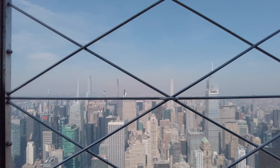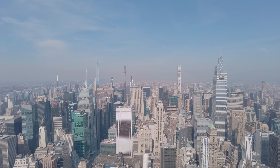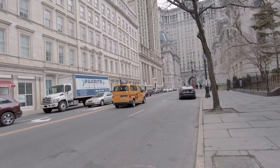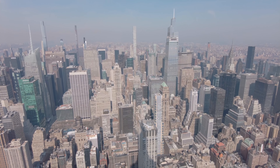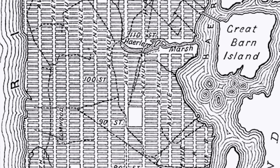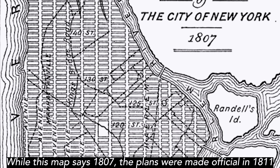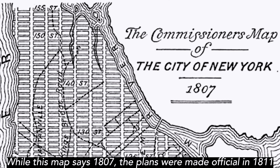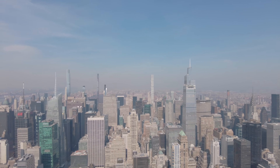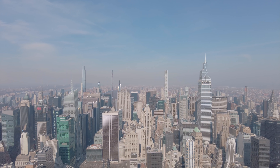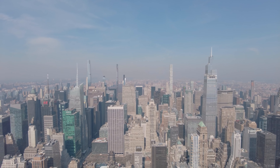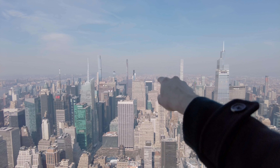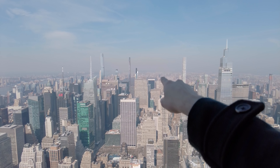In 1811, there was barely any buildings that were more than two stories tall. Most of New York City was concentrated below Chambers Street. However, in 1811, there was a plan called the Commissioner's Plan, and their intention was to carve out New York City into a gridiron — a gridiron that extended all the way to 155th Street.